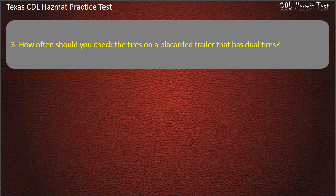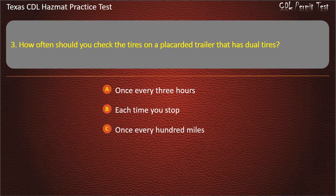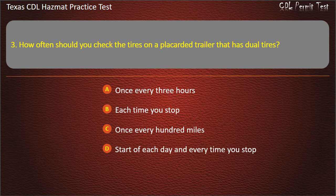Question 3: How often should you check the tires on a placarded trailer that has dual tires? Once every 3 hours. Each time you stop. Once every 100 miles. Start of each day and every time you stop. Answer: Start of each day and every time you stop.